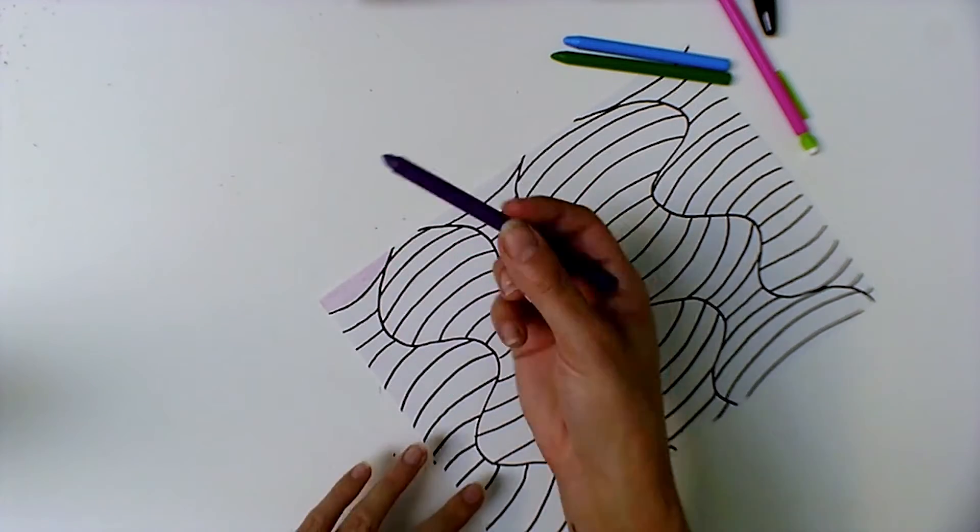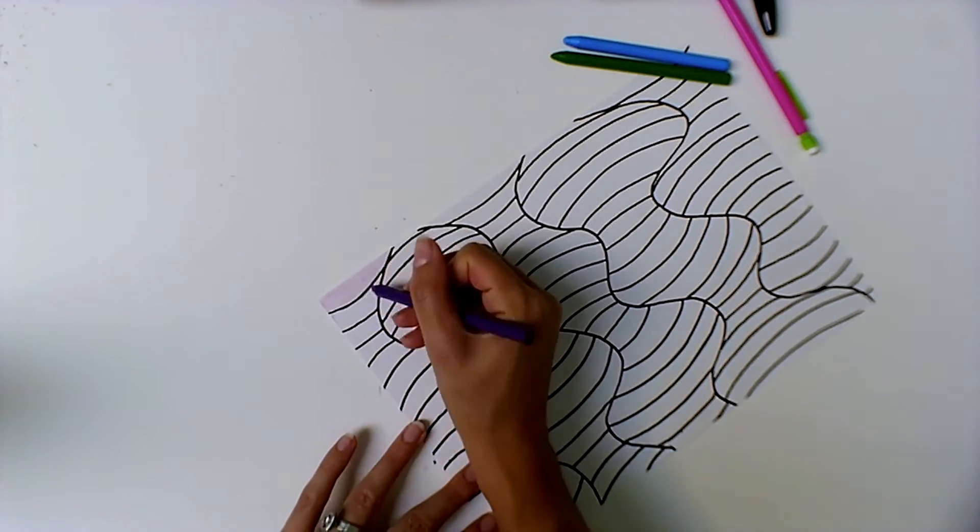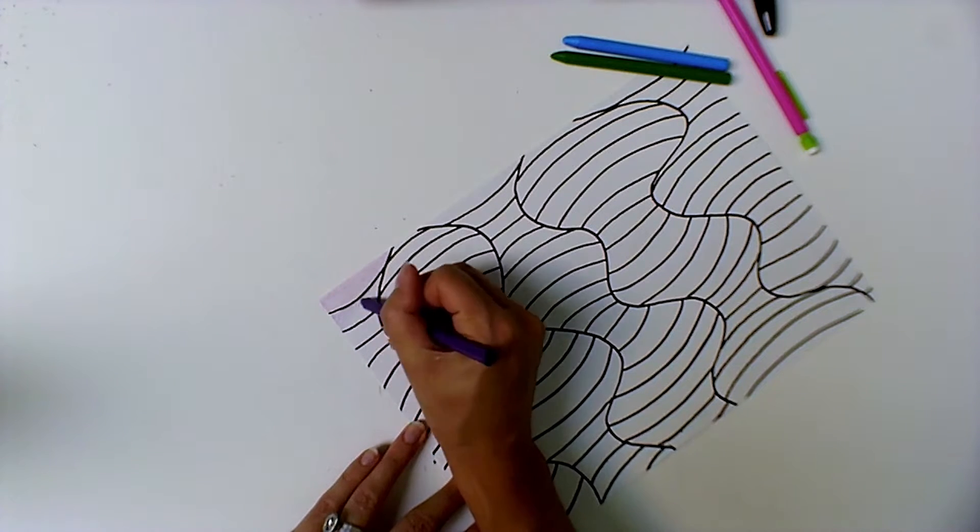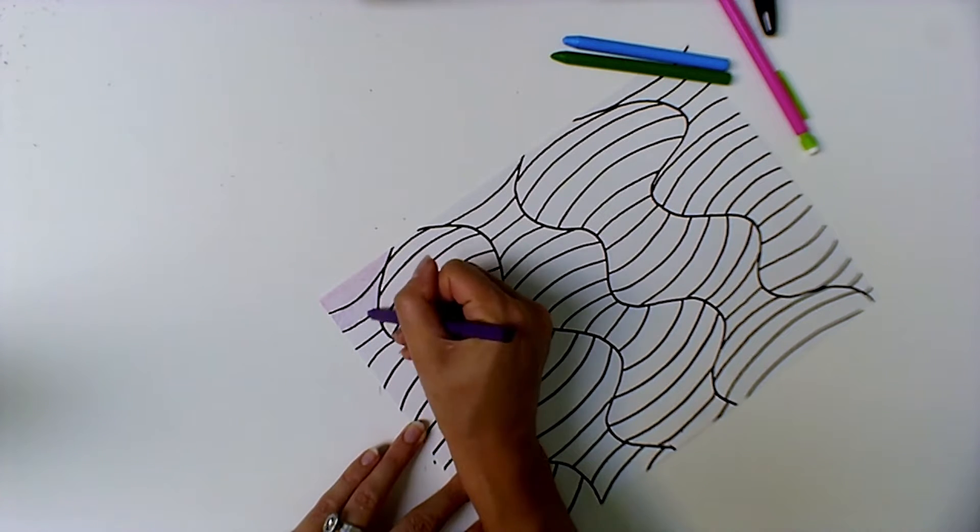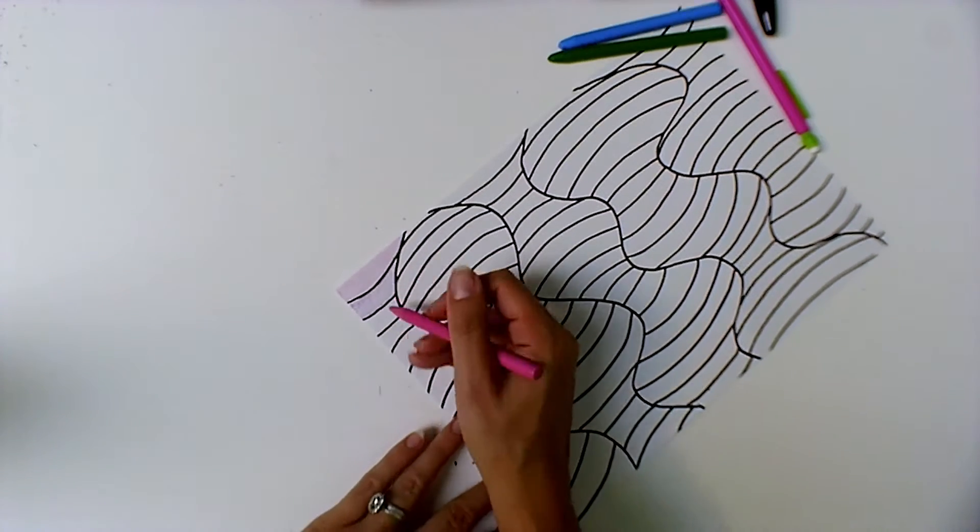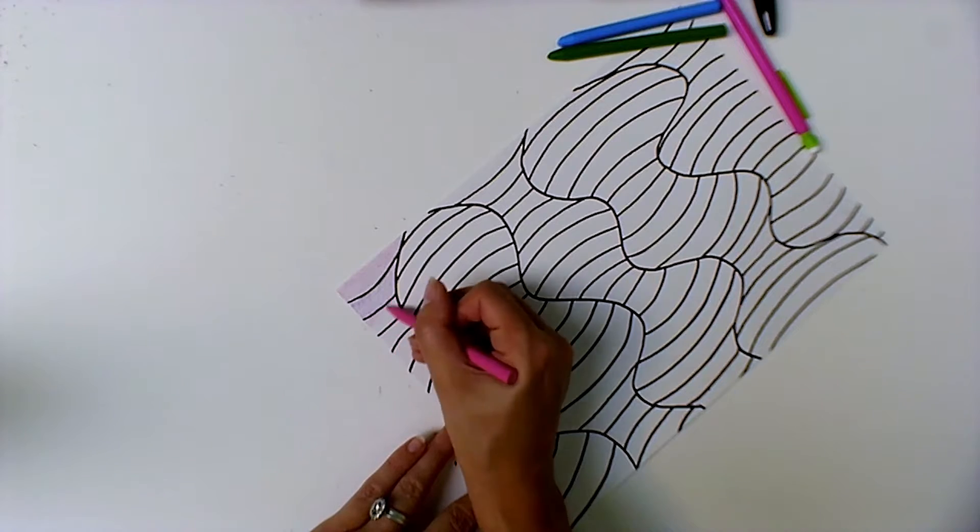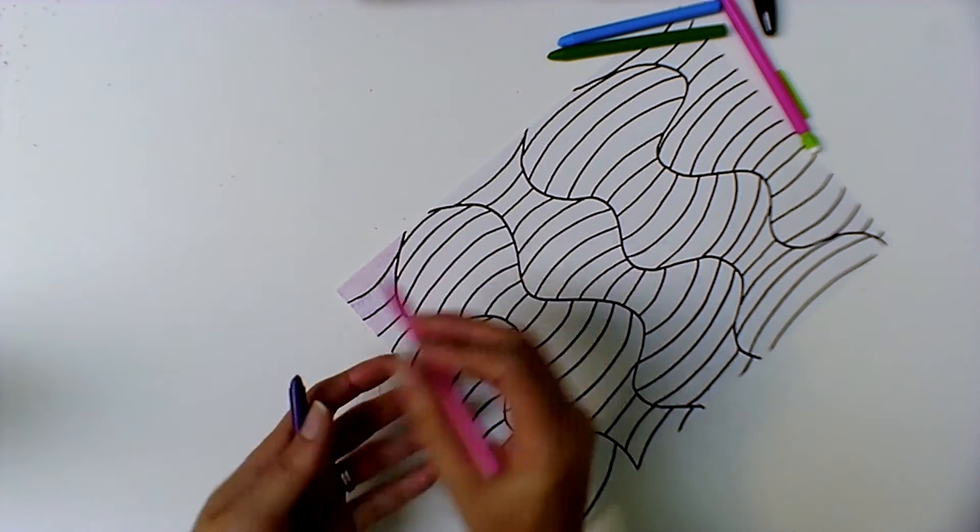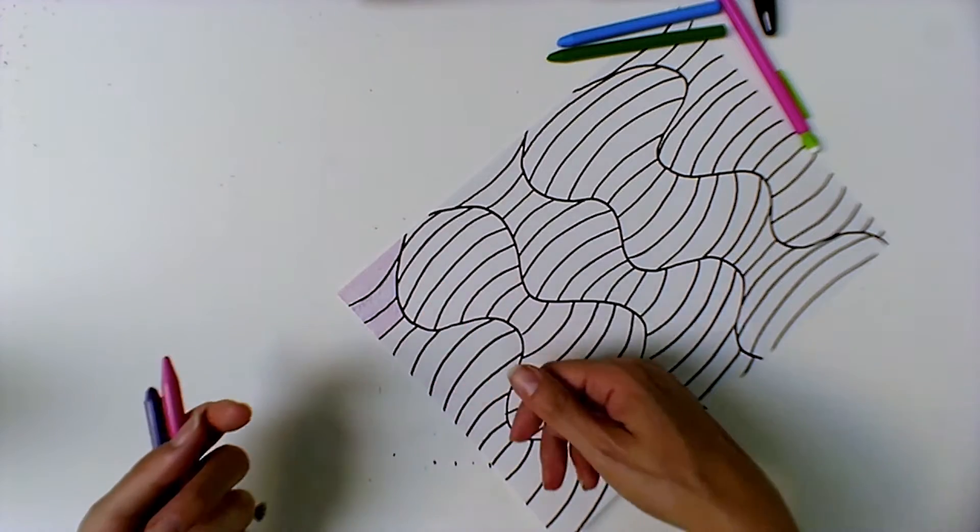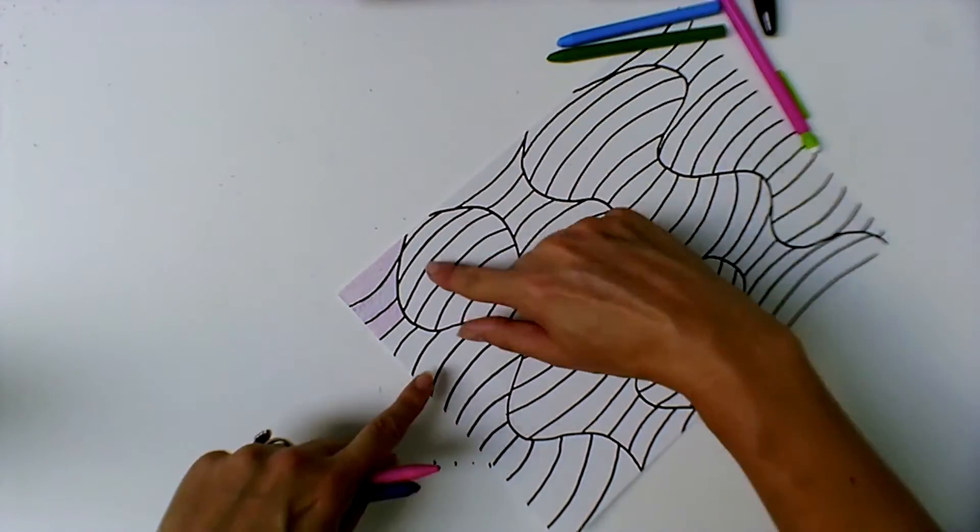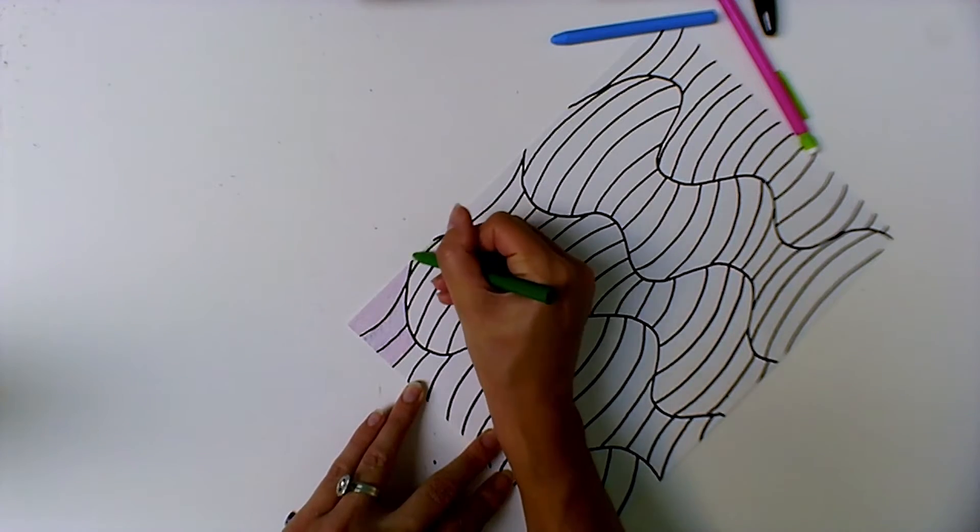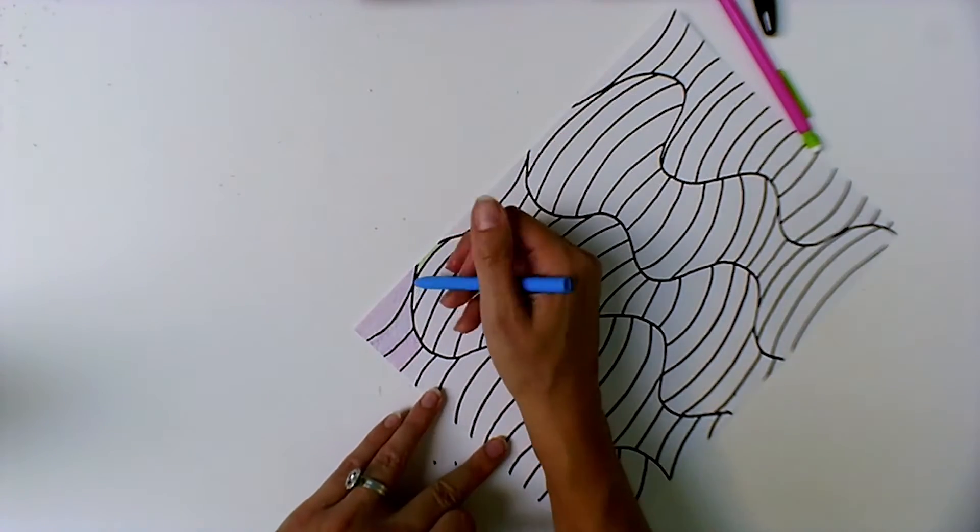And I'm going to go pink, purple, back to pink, back to purple. So pink, purple, pink, purple very lightly. In the next section I'm going to do green, blue, green, blue.